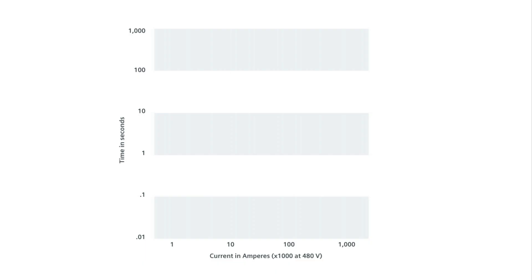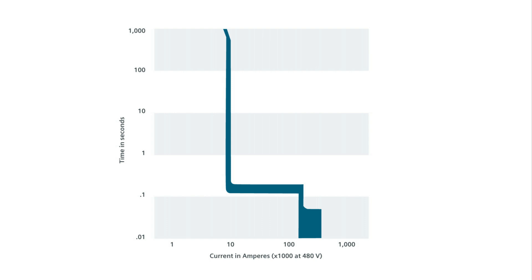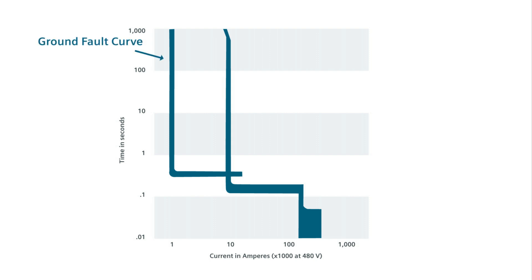Ground fault. What was just tested about short time with or without ZSI is very similar when it comes to the ground fault function. Ground fault performs the same way, but the curve and the pickup current will not exceed 1200 amps.